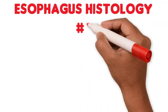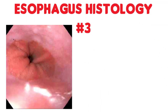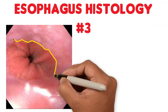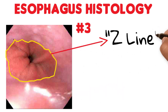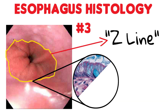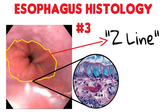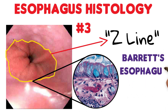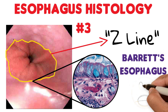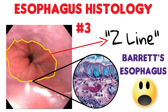In this histology video we are going to focus on the cells located in the distal part of the esophagus, more specifically on the Z-line and how changes in these cells cause a disease known as Barrett's esophagus, which predisposes to esophageal cancer.